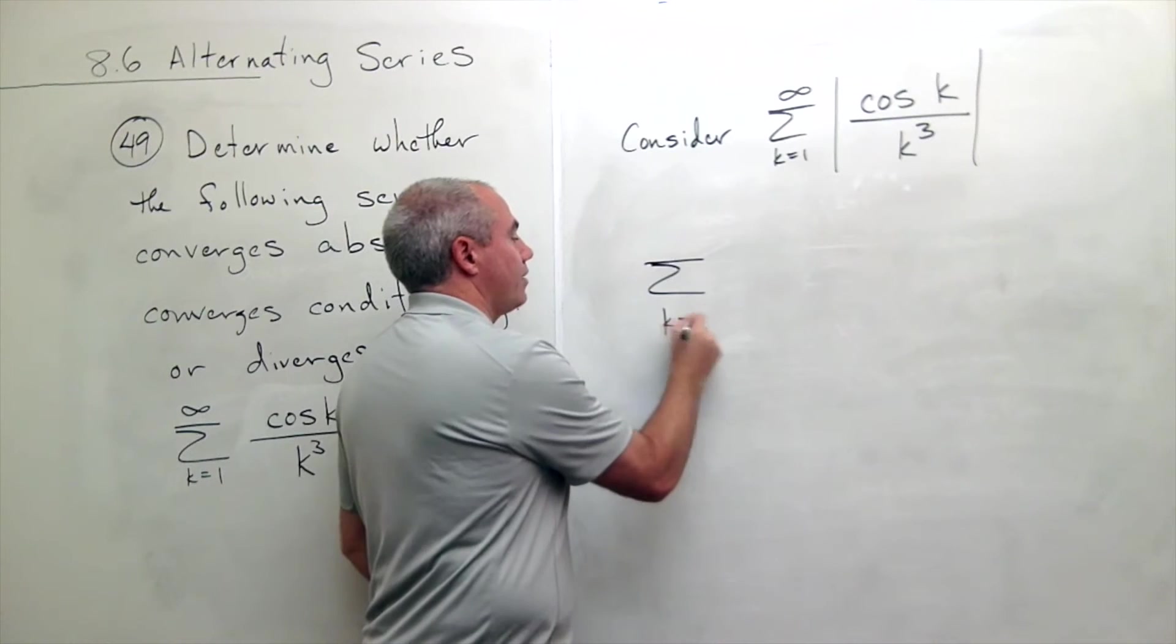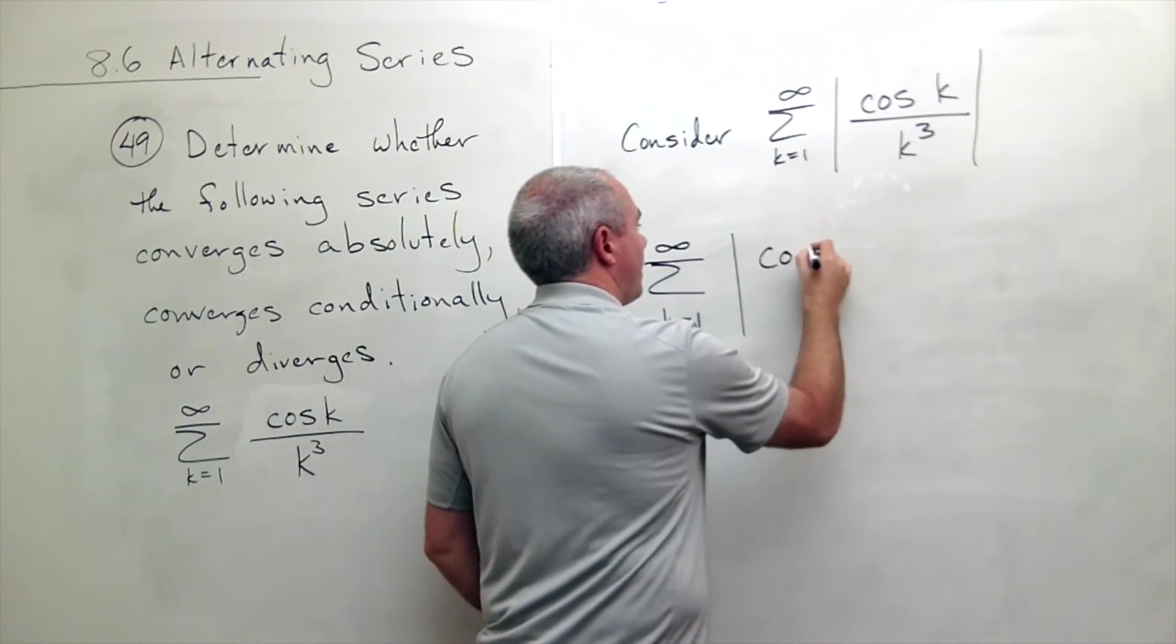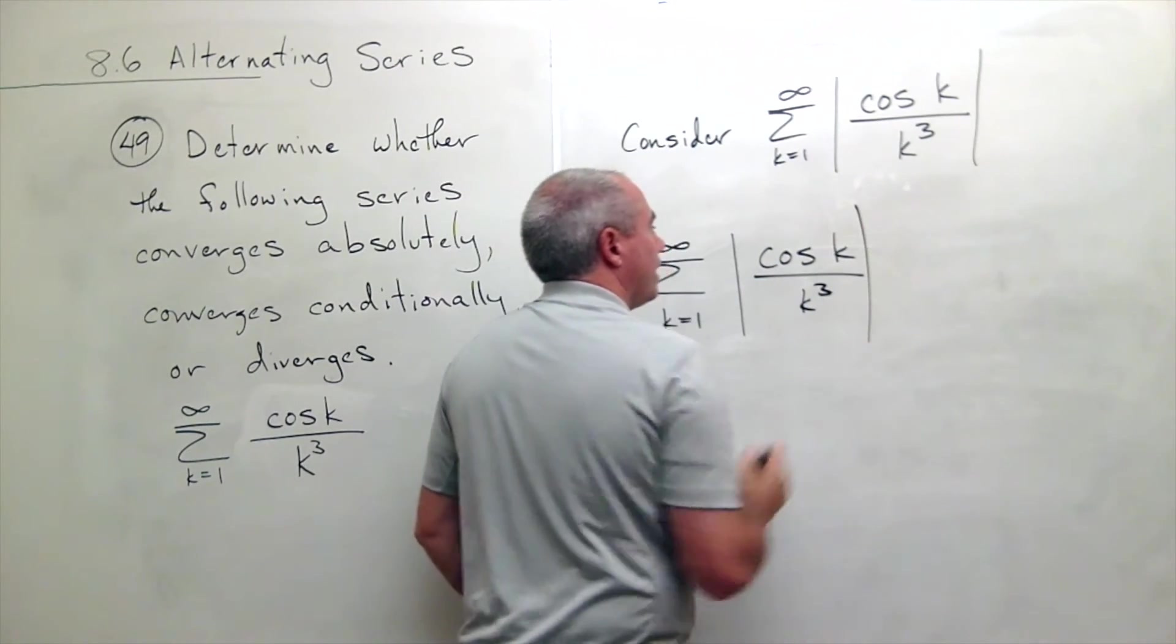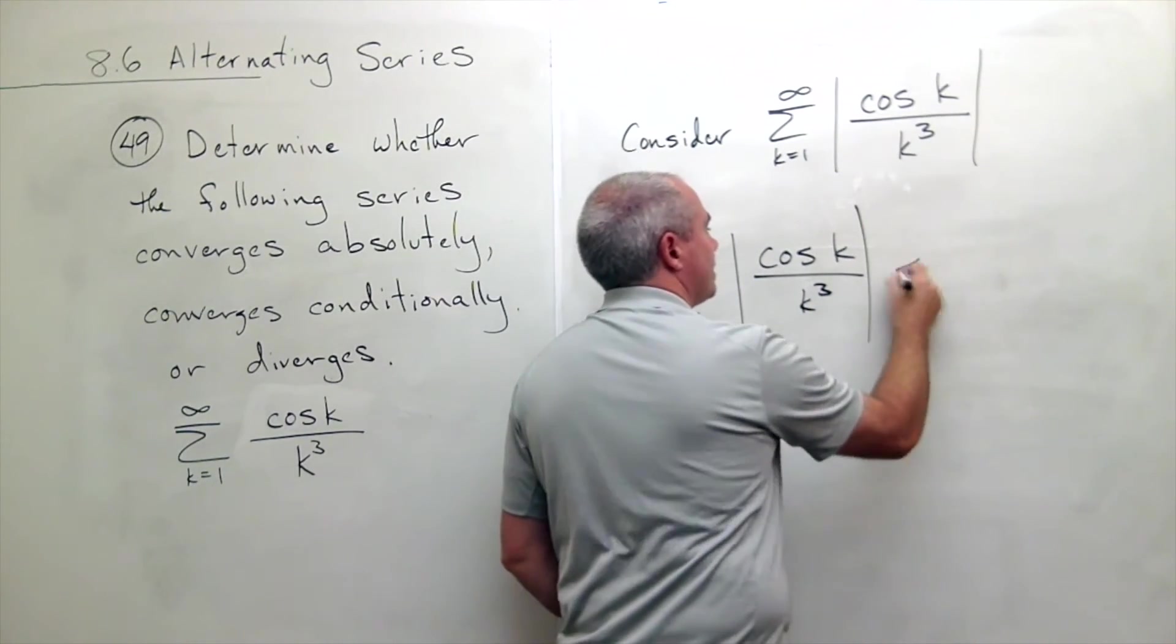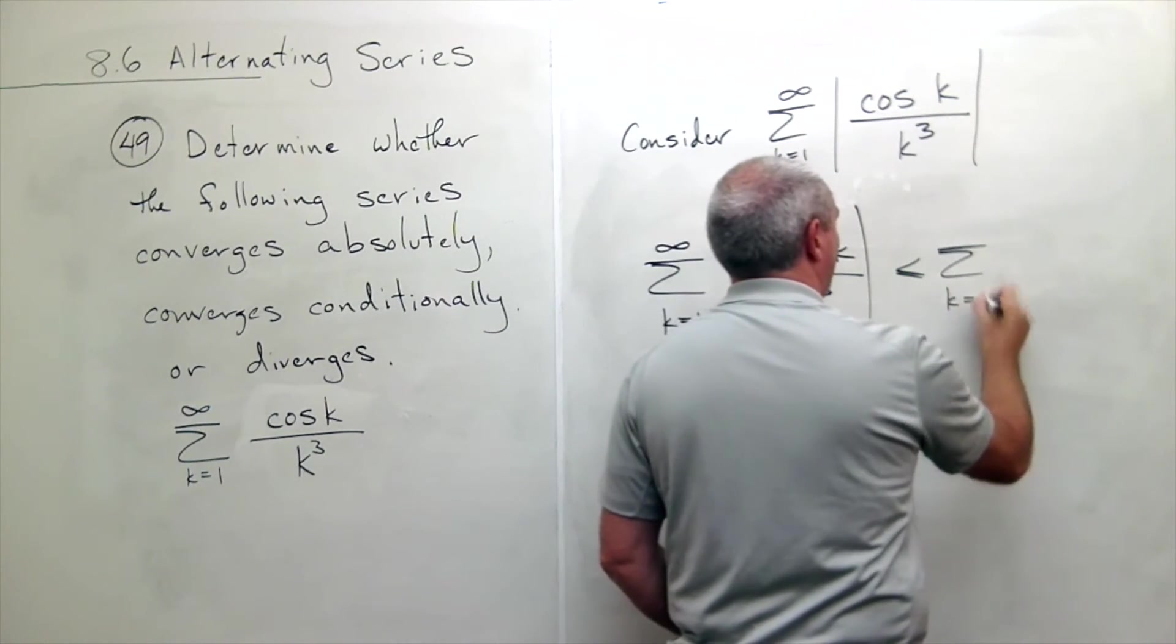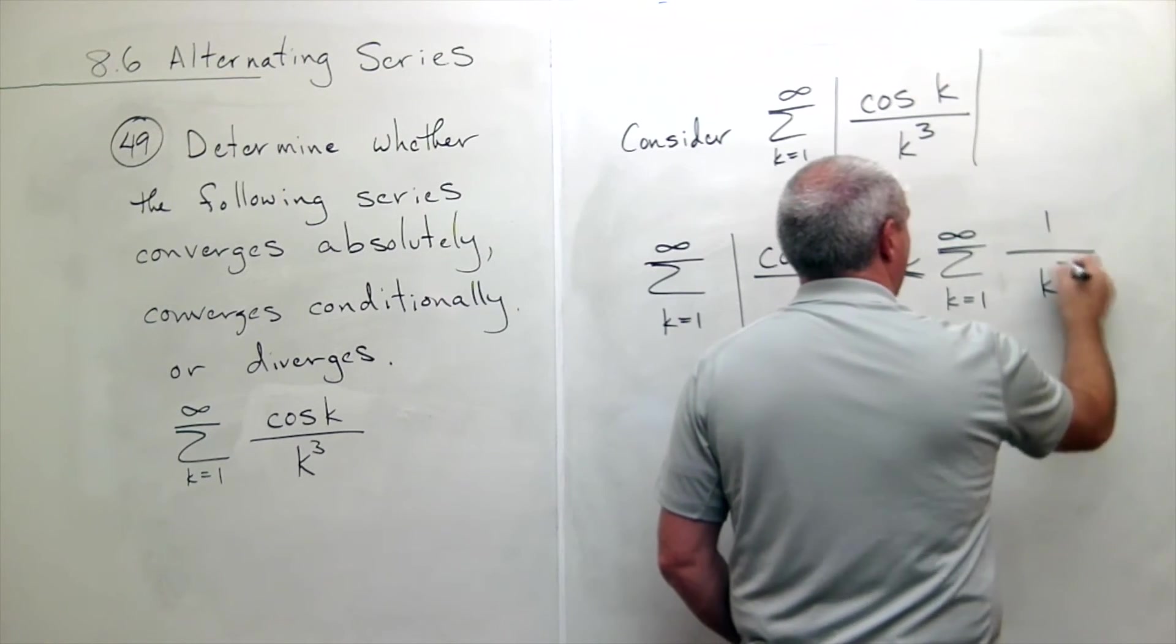I have sum k going from 1 to infinity of absolute cosine k over k cubed, and that's certainly less than or equal to the sum k going from 1 to infinity of 1 over k cubed.